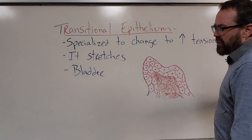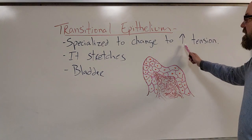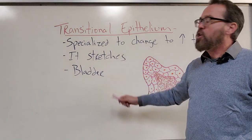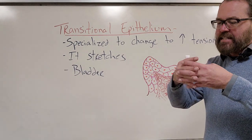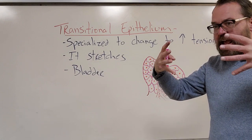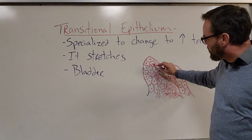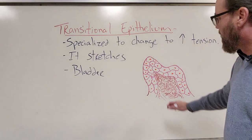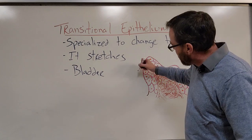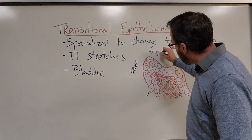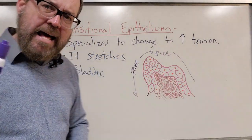Transitional epithelium is a pretty easy one. It gets its name because it's specialized to change under increased tension — meaning it can stretch. We find this tissue specifically in the bladder. As the bladder fills up, we need that tissue to accommodate the fluid being stored and then retract back to its normal size when we empty the bladder. Underneath transitional tissue is connective tissue, and there's a nice bold nucleus that makes it easy to spot. The free space is all around it — super easy one. Transitional: bladder, stretchy.